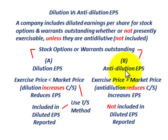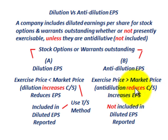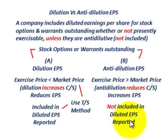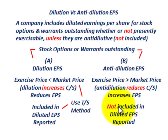The other case is anti-diluted earnings per share, where the exercise price is greater than the market price of the stock. This would reduce common stock and increase earnings per share if you carry through the calculations. In that case, you do not include those options in diluted earnings per share as reported in your financial statement, because they would be reducing diluted earnings per share.